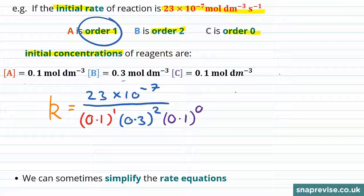You could put all of this into the calculator like so and you'd get the right answer. But one thing to note is if we have anything raised to the power of 0, this is the same as just having the number 1. And if we're multiplying by 1 everything else on the bottom, it doesn't actually change anything. So you don't need to include anything that's order 0 in the reaction.